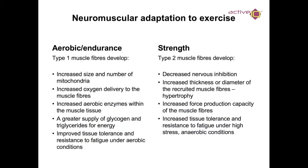Neuromuscular adaptations to exercise: for aerobic and endurance events, type 1 muscle fibers develop. Adaptations include increased size and number of mitochondria — the powerhouse of the cell — increased oxygen delivery to muscle fibers, increased aerobic enzymes within muscle tissue, a greater supply of glycogen and triglycerides for energy, and improved tissue tolerance and resistance to fatigue under aerobic conditions.